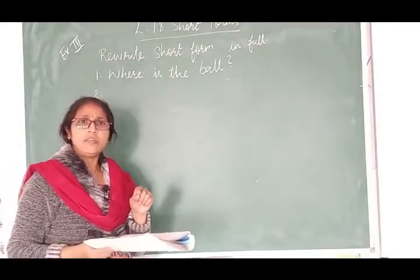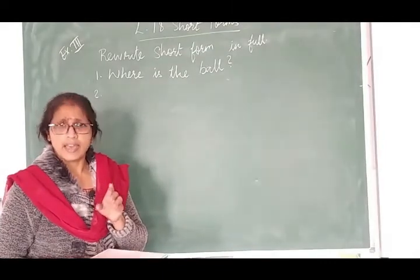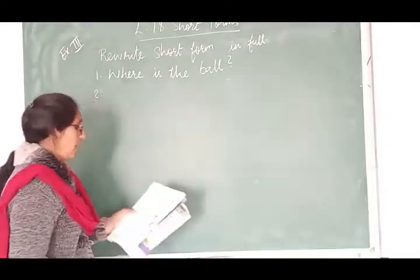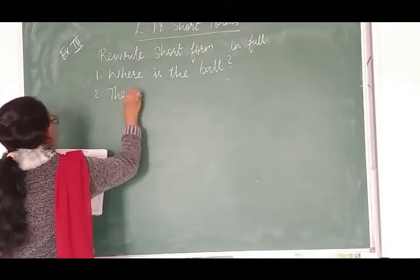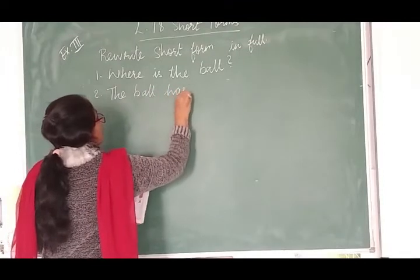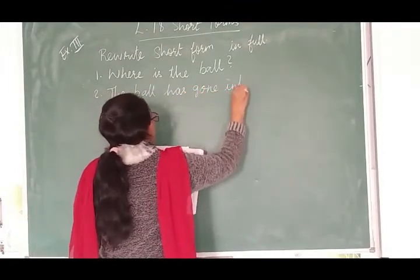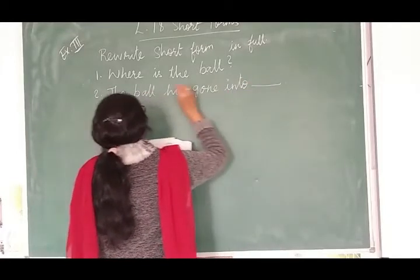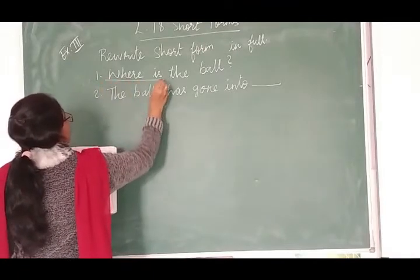So, maine aapko kya bola hai? Jabhi bhi verb V3 form mein aata hai, sentence mein, you will put has, okay? V3 form hai toh. Toh, yaha pe answer kaisa, the ball has gone into the pond. Yeh pura haam complete karenge, okay? Or, jaha pe aapne short form change kiya hai, you have to underline it, okay?